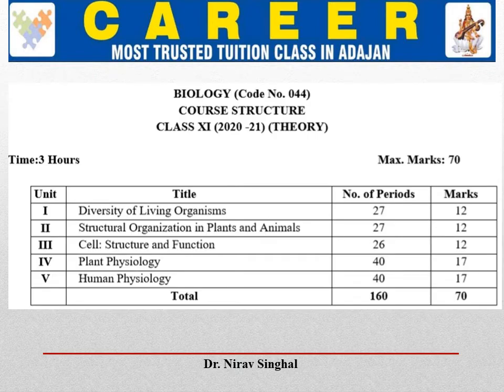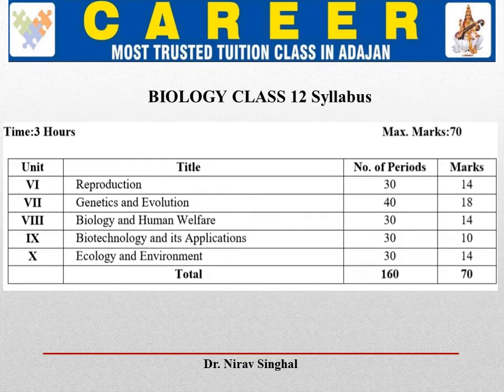The details of various units and mark distribution for Class 11 Biology show that it is divided into 5 different units with a total weightage of 70 marks. Amongst these, Plant Physiology and Human Physiology have the highest weightage of 17 marks each. In the national Biology syllabus, Unit 6 to Unit 10 belong to Class 12, and Genetics and Evolution has the highest weightage. Please do refer to this while preparing for your Board Examination.